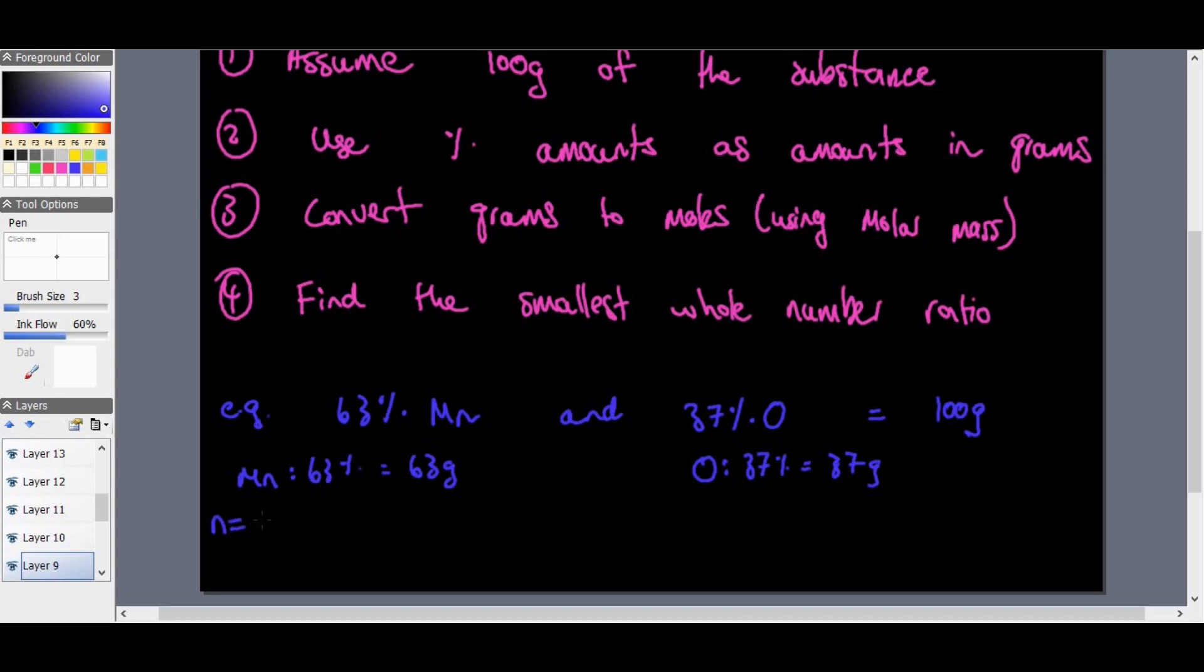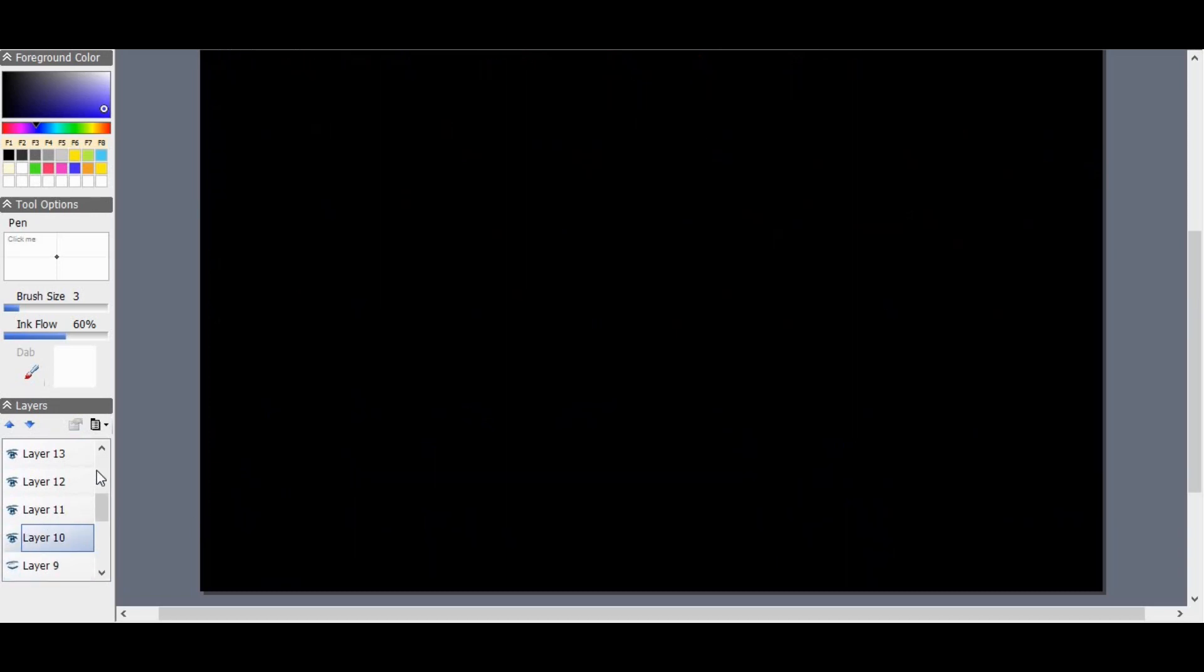So now we use the formula N is equal to mass divided by molar mass, which is equal to 63 divided by molar mass of manganese, I think is 55. And that'll equal around 1.145 mole. For oxygen, you've got the same thing, N is equal to M over big M, which is equal to 37 divided by 16. That should give us 2.3125 mole. The reason why I've kept these numbers, the bit of decimals there, is to make the simplification a little bit more accurate.